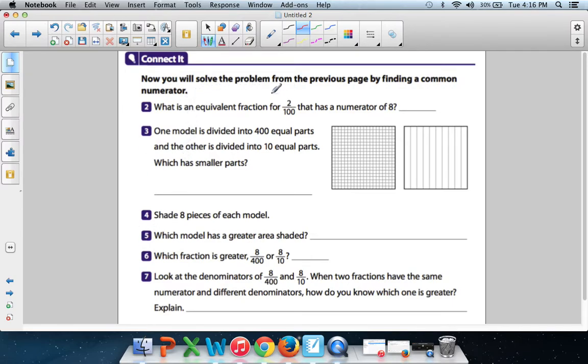Now you will solve the problem from the previous page by finding a common numerator. What is an equivalent fraction for 2 over 100 that has a numerator of 8? What? It's actually not that hard. They want a numerator of 8. We have a numerator of 2.